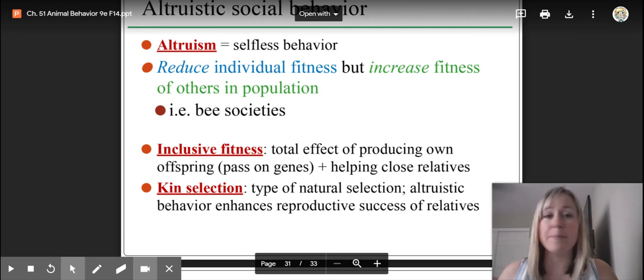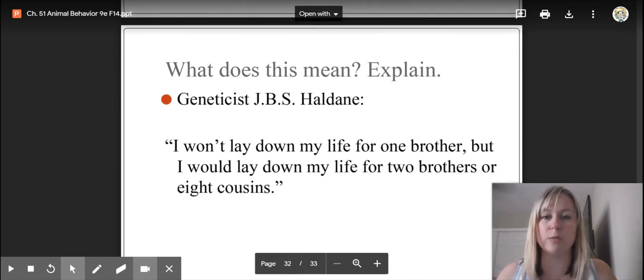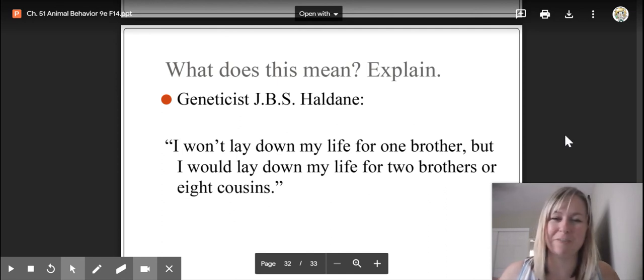Now, kin selection is just the type of natural selection that increases the inclusive fitness. It is a way to make sure that your relatives are successful in passing on the family genes. Then there's a quick quote that I end this one with, which is what does this quote mean? I won't lay down my life for one brother, but I would lay down my life for two brothers or eight cousins. So think about that one. It is a bit of a genetics quote, a bit of a genetics joke, and it has a lot to do with altruism. If you have questions about that quote or what he means by that, we can talk. I want you to think about that.